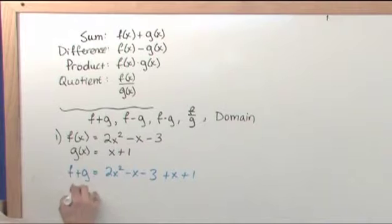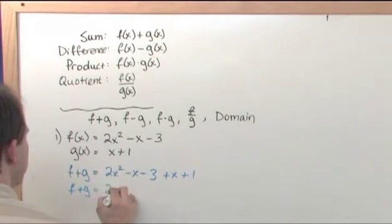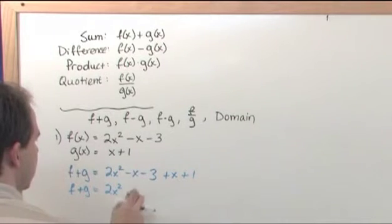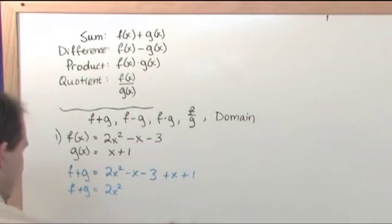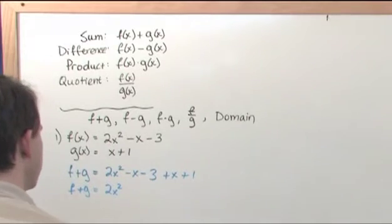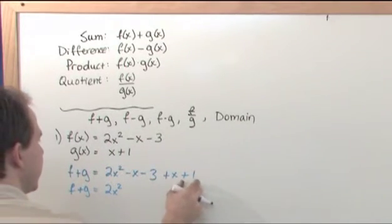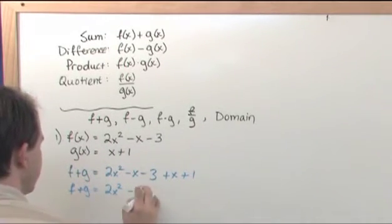So f plus g would then be, if we just simplify this, 2x squared. And you have minus x plus x, which goes away, so it gives you 0. And then you have minus 3 plus 1, which is minus 2.